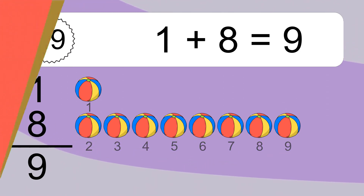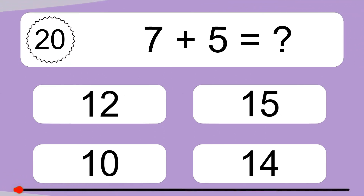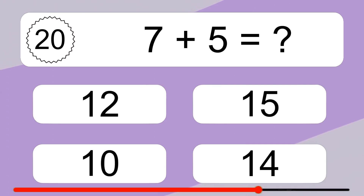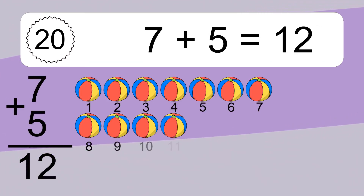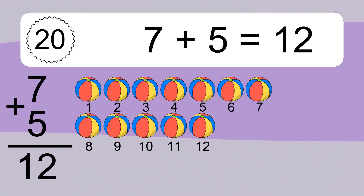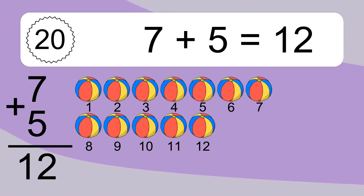7 plus 5 equals what? Let's count it. 1, 2, 3, 4, 5, 6, 7, 8, 9, 10, 11, 12.